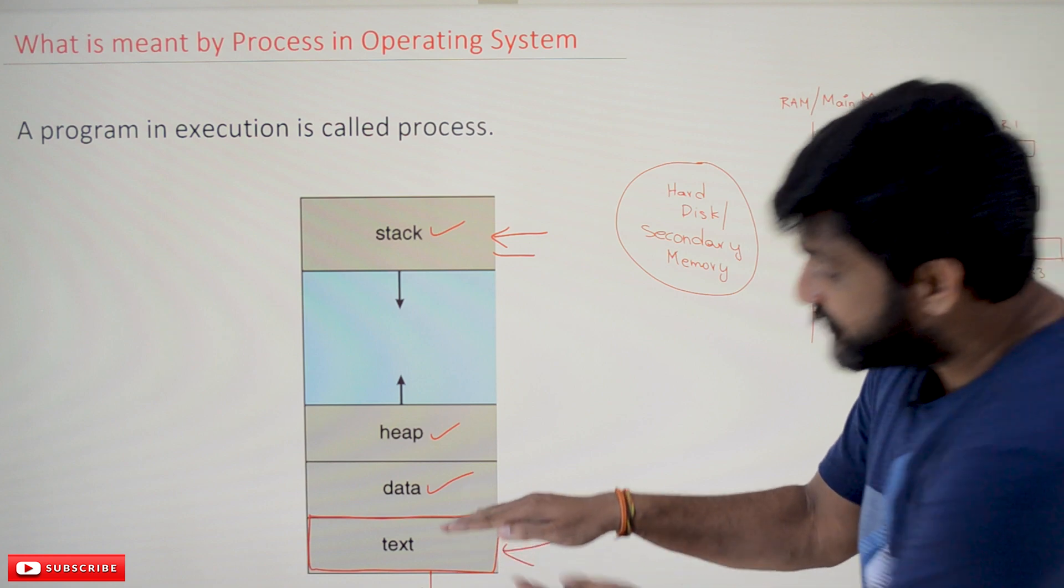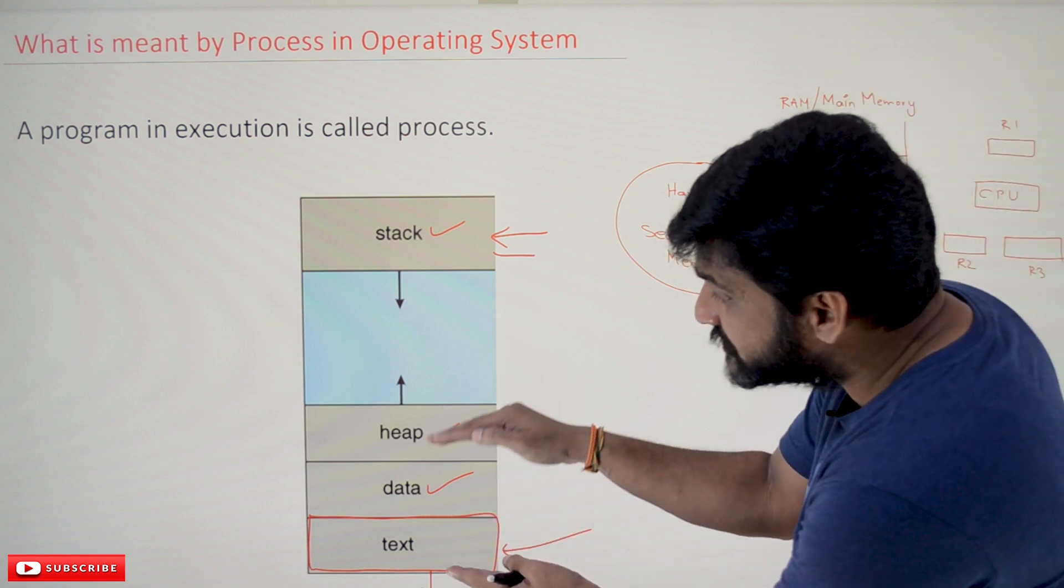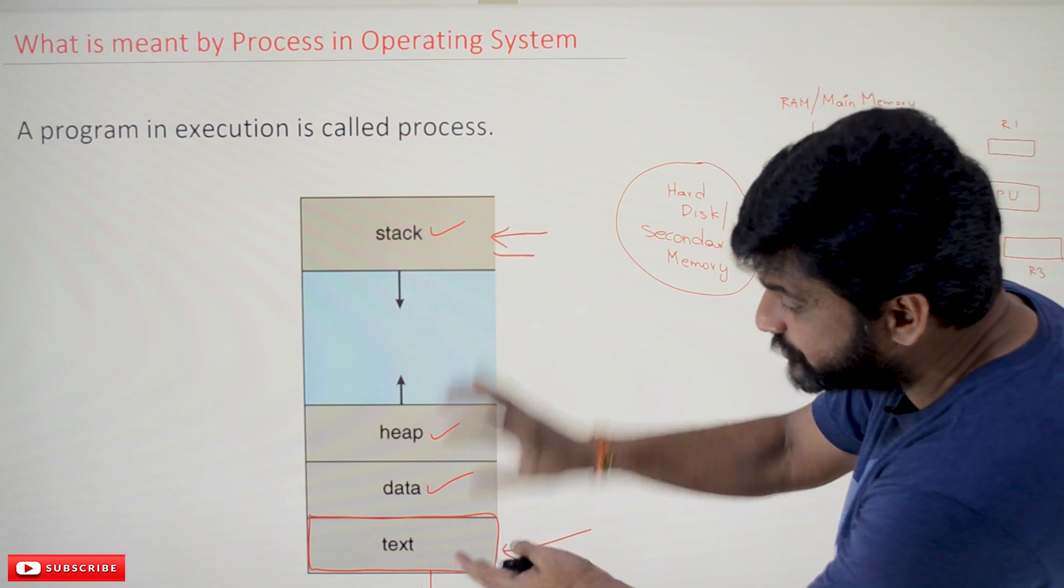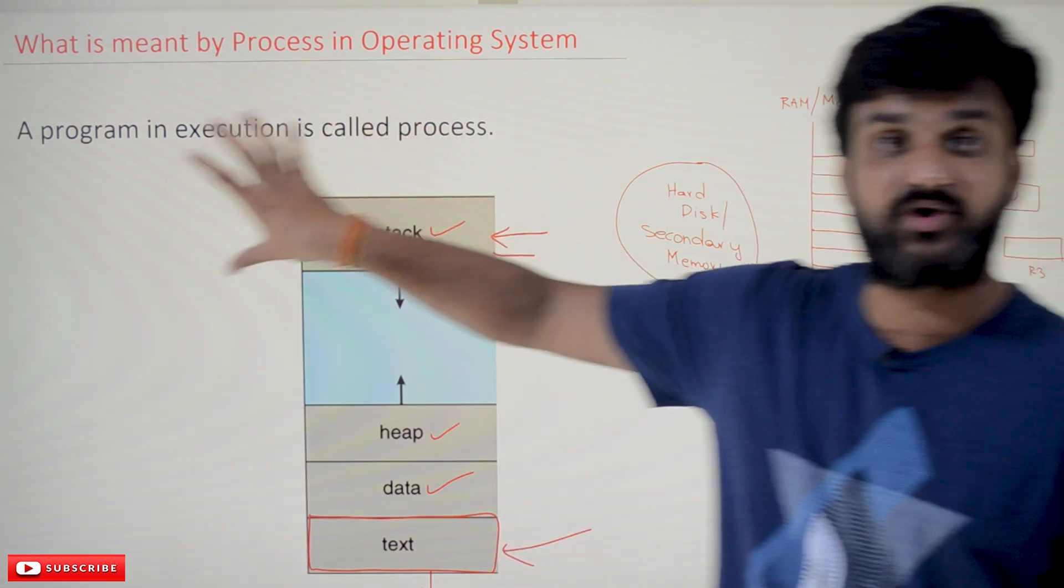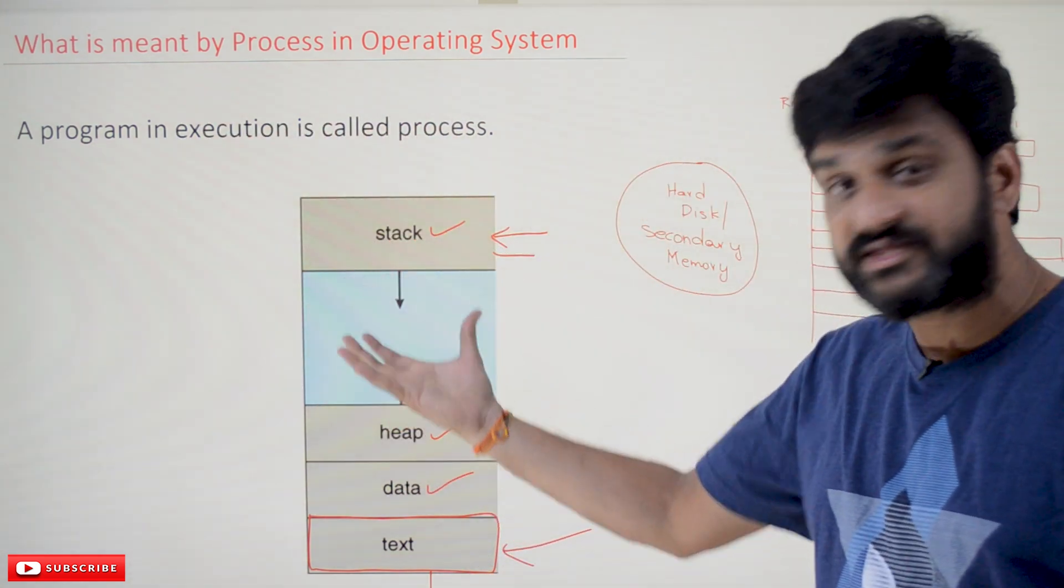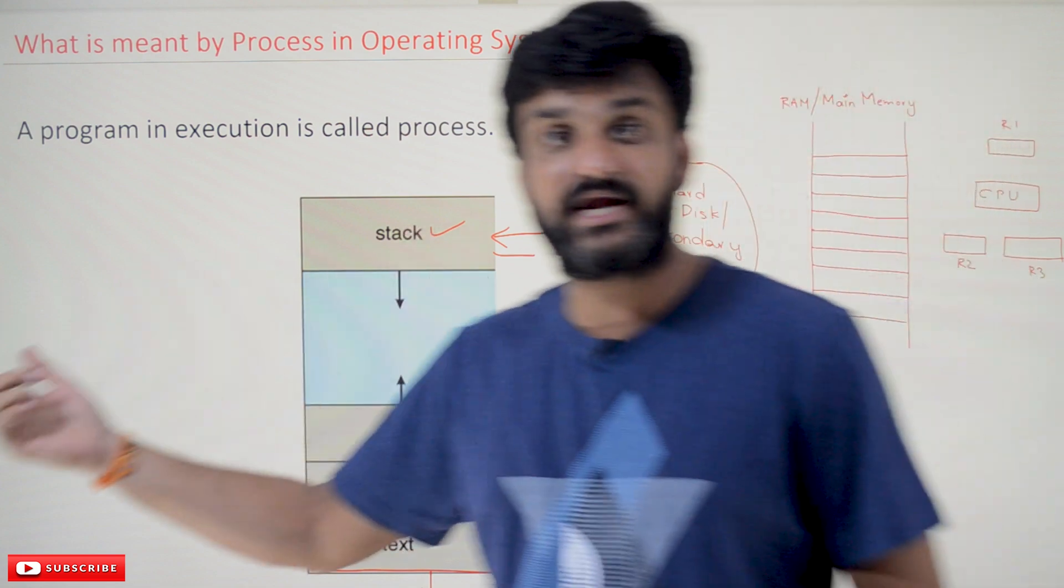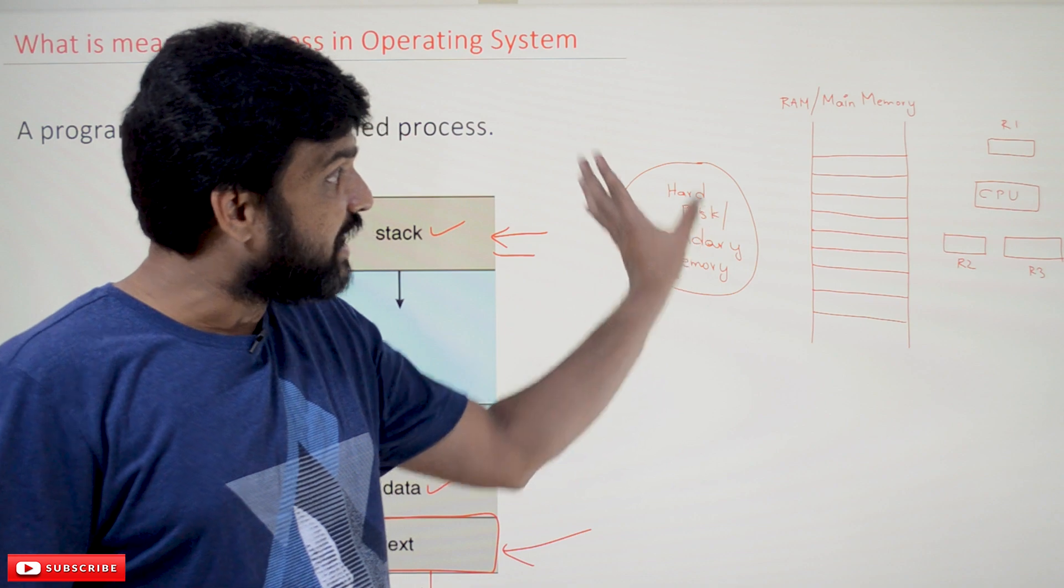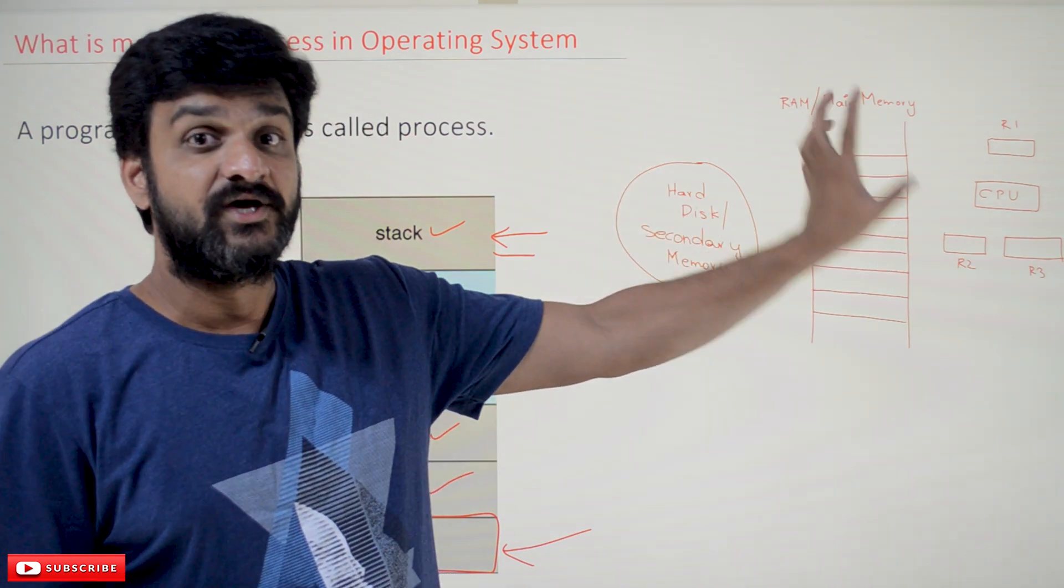All the global variables and static variables will get created in this data section. For this program, the memory that is getting allocated—combining the memory to the program—is what we call a process. Whenever we run a program, that will get converted into a process and it will get shifted from hard disk to main memory.